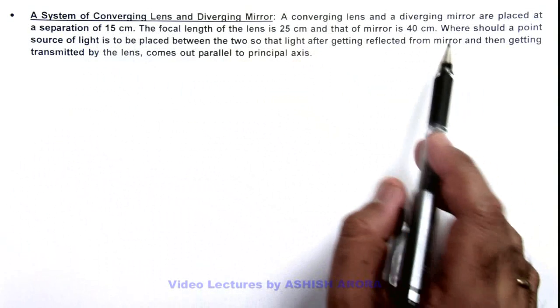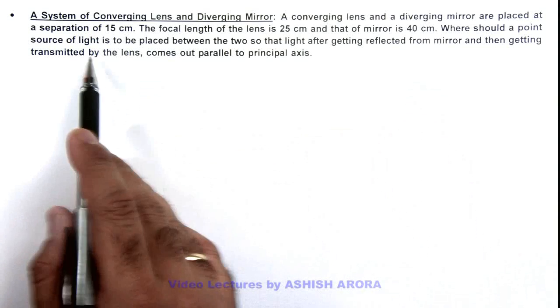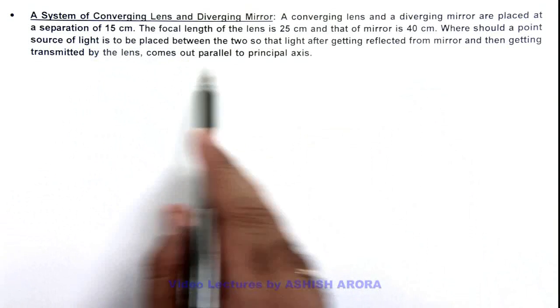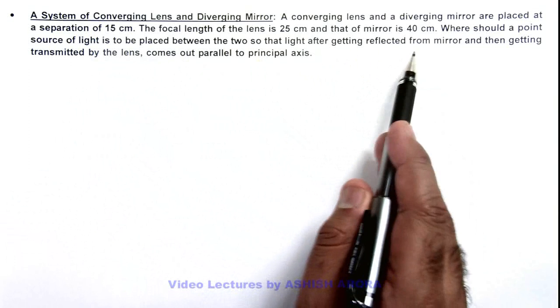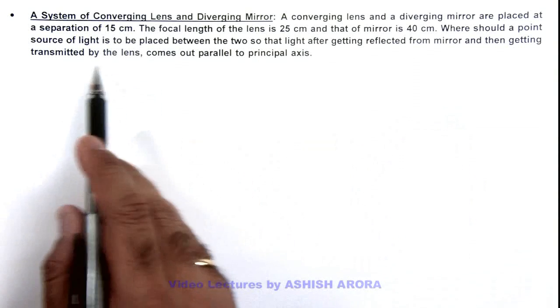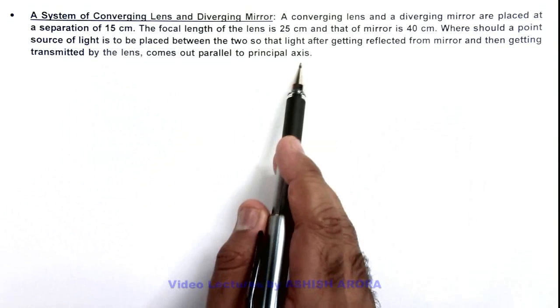It is asking where should a point source of light be placed between the two so that light, after getting reflected from mirror and then getting transmitted by the lens, comes out parallel to principal axis.